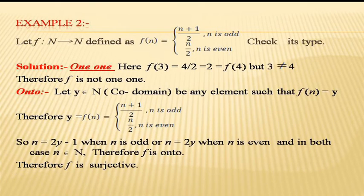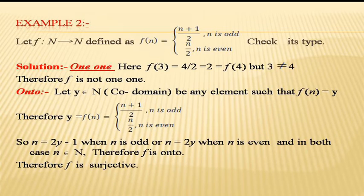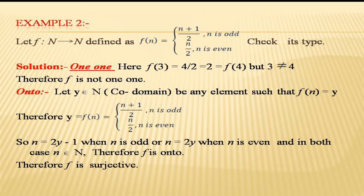In example two, f is a function from ℕ to ℕ defined as f(n) = (n + 1)/2 if n is odd, and f(n) = n/2 if n is even. We have to check its type. First checking the one-one property: f(3) = (3 + 1)/2 = 2, and f(4) = 4/2 = 2. So f(3) = f(4) but 3 ≠ 4, therefore f is not one-one — it is a many-one function.